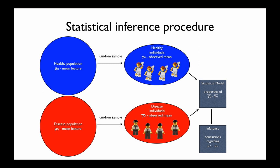To recap this statistical inference procedure: we are interested in determining a difference between the healthy and disease population. We collect random samples from both populations, then look at the difference between the statistics of these samples — typically the mean — and build up a statistical model of the properties of those differences. We then make an inference: a conclusion regarding the difference in the populations.